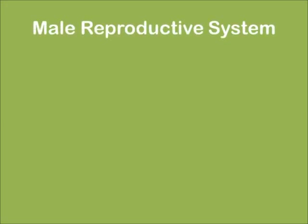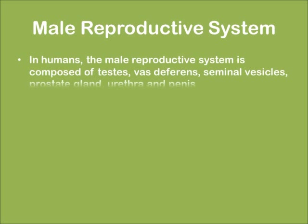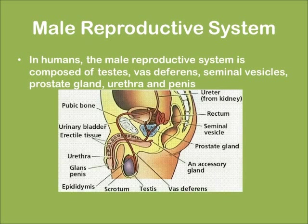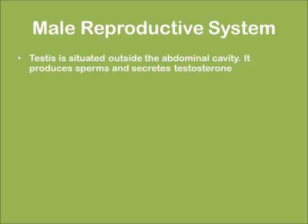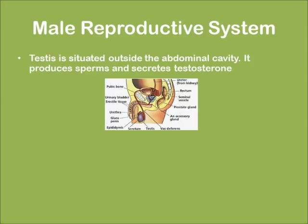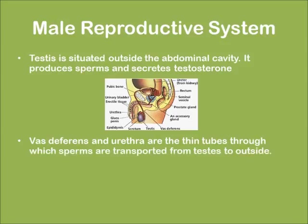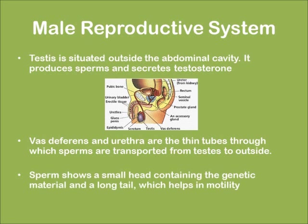The male reproductive system is composed of the testis, vas deferens, seminal vesicles, prostate glands, urethra, and the penis. The testis is situated outside the abdominal cavity; it produces sperms and secretes testosterone. The vas deferens and urethra are thin tubes through which sperms are transported from the testis to the penis. Sperms have a small head containing genetic material and a long tail, and are nourished in the seminal fluid.